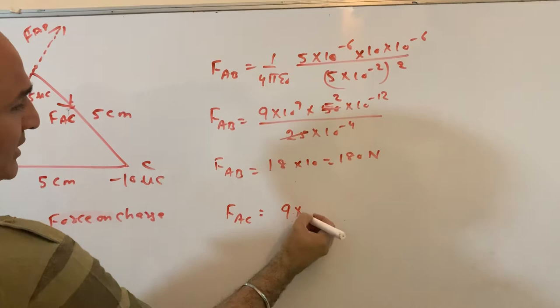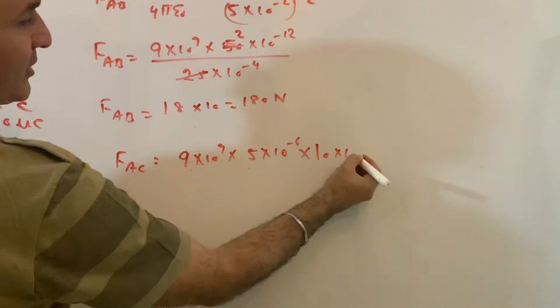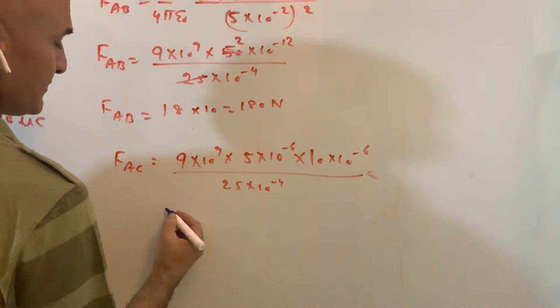You will get 9×10^9, I'm writing directly: 5×10^-6. Now this is a negative charge, but don't put negative because the force has come in this direction. 10×10^-6 divided by 25×10^-4.